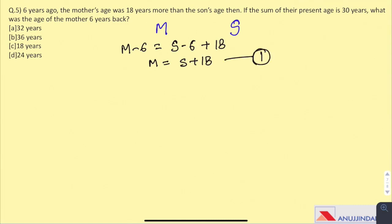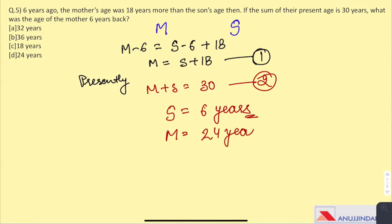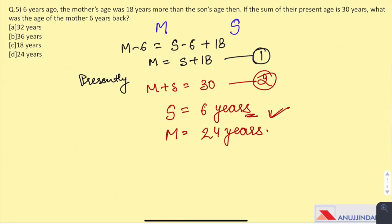On solving equation 1 and 2, we get S is 6 years, which is age of son is 6 years. And the age of mother would be 24 years. These are the present ages of both of them. And now the question asks about what was the mother's age 6 years ago? So, 6 years ago, it was 18 years. So, C is the answer. And in such questions, where both the present and the age 6 years ago is given in the options, do mark the options carefully, so as not to do the mistakes.